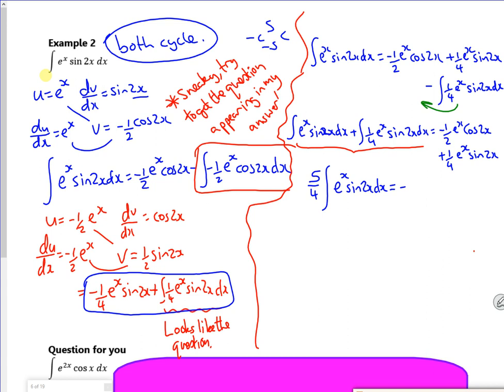Right, so what have we said? We've combined the left hand side together, so the right hand side becomes minus a half e to the x cos 2x plus a quarter e to the x sin 2x with a plus c knocking it out.